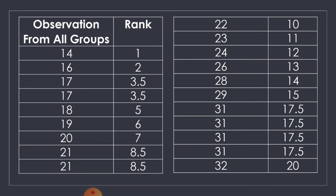Then, 22 is rank 10, 23 is rank 11, 24 is rank 12, 26 is rank 13, 28 is rank 14, 29 is rank 15. Then we have 4 data values that are the same — they share ranks 16, 17, 18, and 19. Getting their mean: 16 plus 17 plus 18 plus 19 equals 70, divided by 4, that is 17.5. Then 32 will be rank 20.